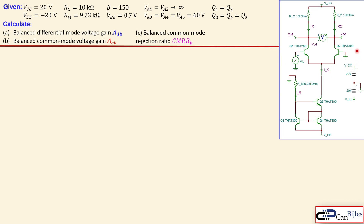Looking at our example circuit, we have a differential pair formed by Q1 and Q2, and the source current is our Wilson current source formed by Q3, Q4, and Q5. Q1 and Q2 are matched — they have the same physical dimensions, beta, and infinite early voltage. Q3, Q4, and Q5 are also matched, with early voltages of 60 volts.